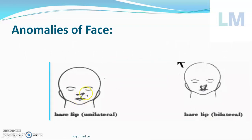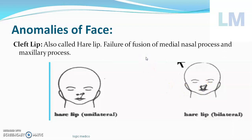The next anomaly of the face is harelip (cleft lip) — a detailed video has been done on cleft lip. The failure of fusion of the maxillary process with the median nasal process gives rise to lateral cleft lip. That can be on only one side, called unilateral, or both sides, called bilateral. Cleft lip is also called harelip. Failure of fusion of the medial nasal processes of both sides — if they fail to unite in the midline — results in median cleft lip.